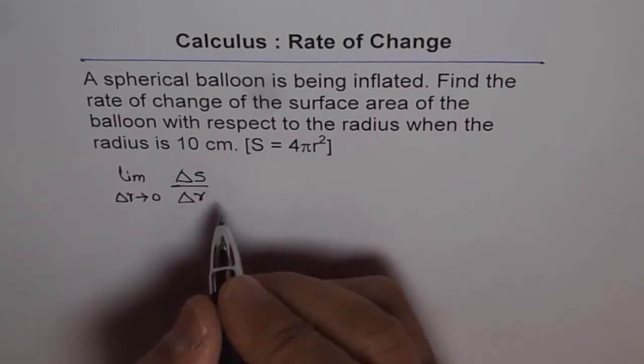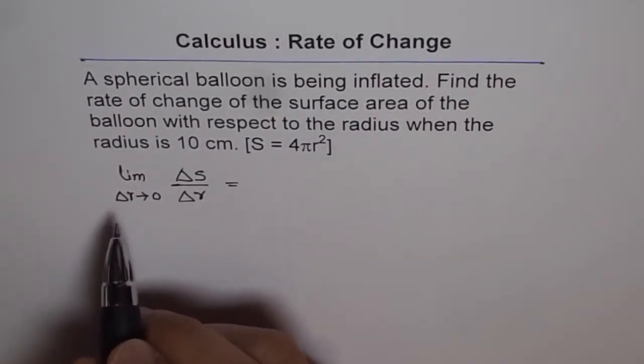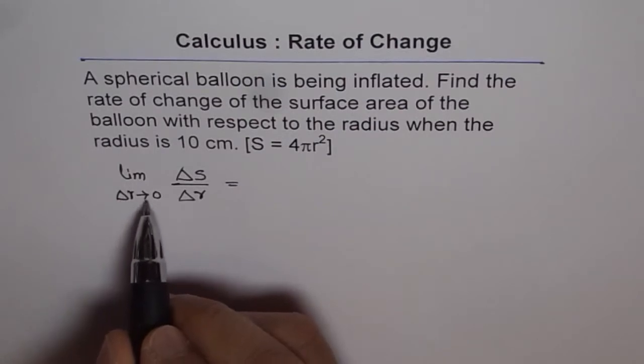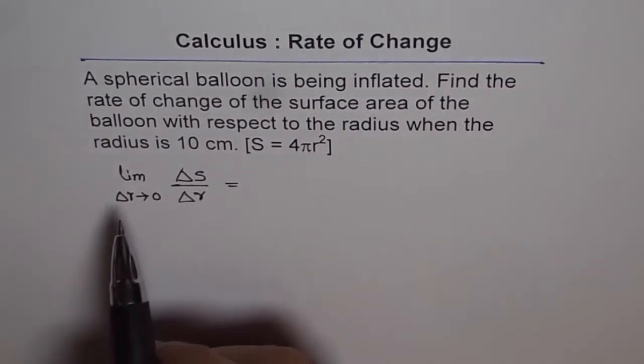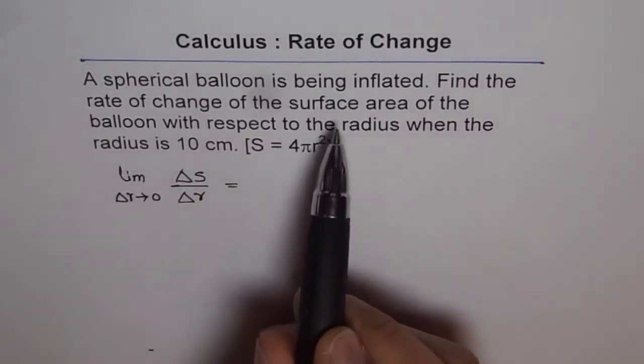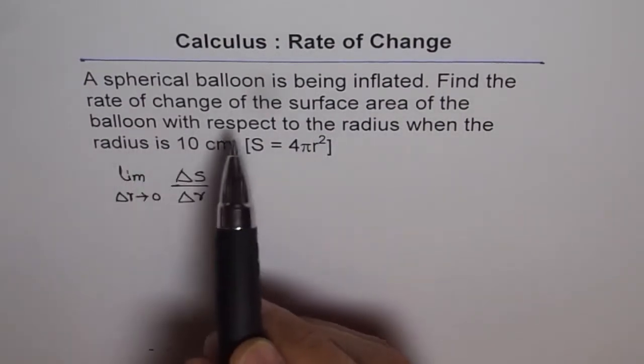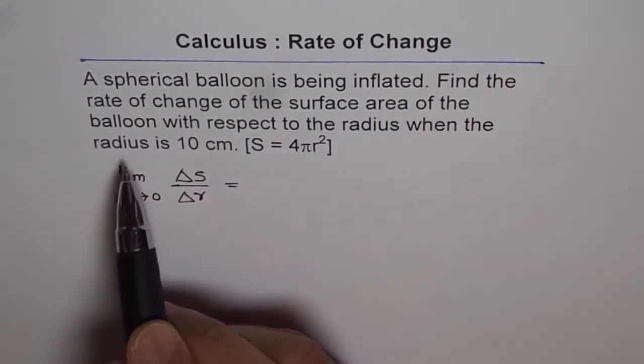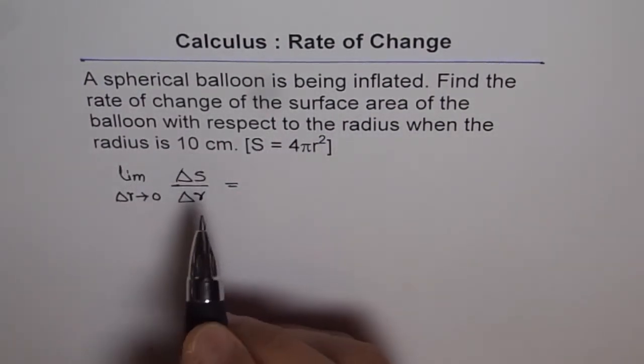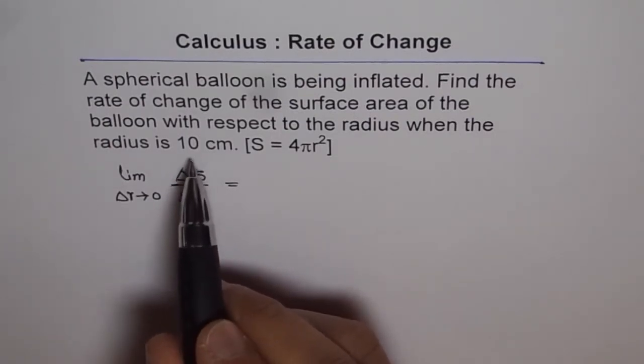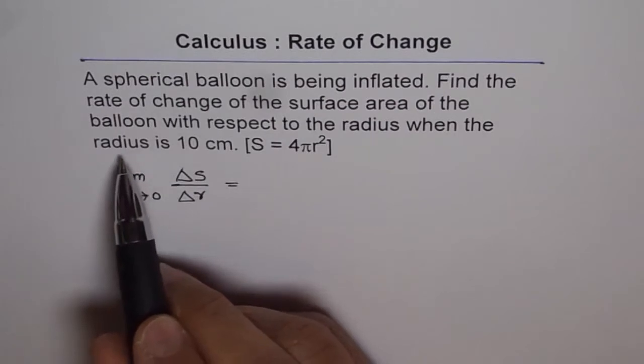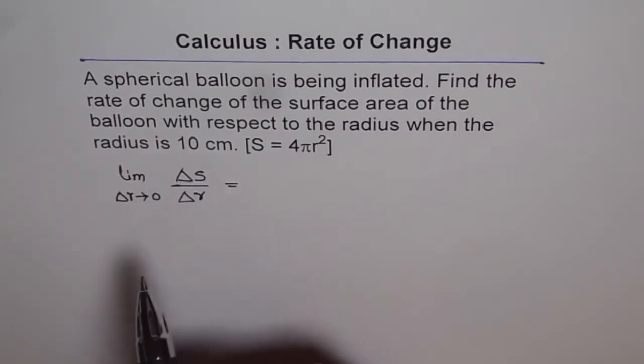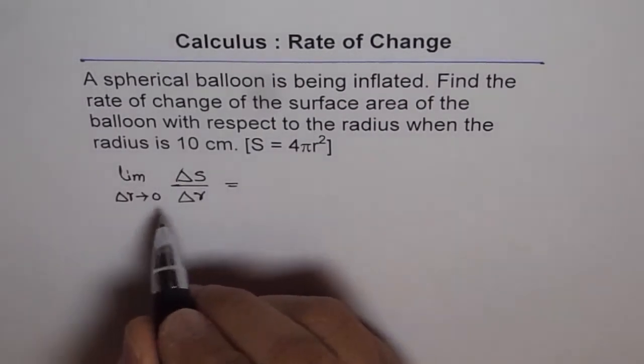Now, that means what? When we say delta r approaching 0, and we are interested in finding surface area, I mean rate of change of surface area when radius is 10, it means that we have to take an instance which is very close when the radius is 10. That is what it means. So let that be the r value.